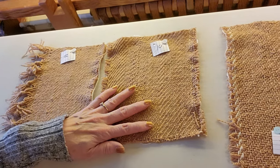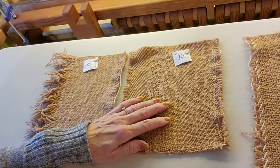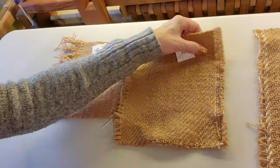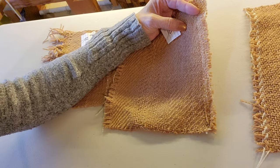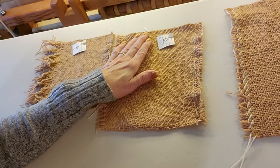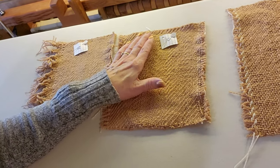The next one is 10 ends per inch and 10 picks per inch. This has a better feel. It's fairly dense and I'm thinking that once I wet finish it, it might be too dense once the wool blooms.